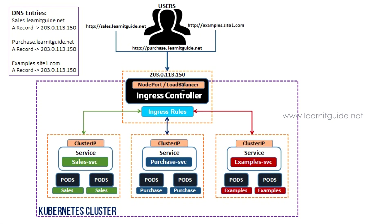The Ingress controller runs as a pod. When you apply this, you create pods and services. You can expose services using node port or load balancer for the entire Kubernetes cluster, so you can access the Ingress controller from outside the cluster. You can point your DNS to your load balancer and manage your multiple domains through that single entry point.